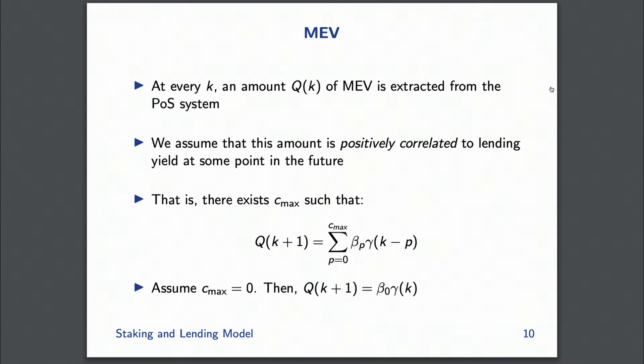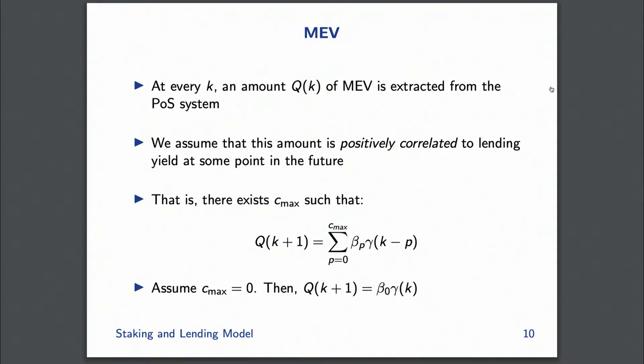The next step is to model MEV. The crucial assumption is that lending yields now are correlated to MEV at some point in the future — lending now causes liquidations later. We model this as an autoregressive process where Q(k+1), the MEV extracted at time k+1, is positively correlated to lending yields at some time in the past. For simplicity, we assume that lag is zero, giving an equation that relates yields right now to MEV in the next step.